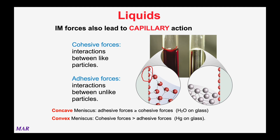Glass is polar and water is polar, so water grabs onto it — those are the adhesive forces at work. Mercury, on the other hand, has metallic bonding, which is a different kind of force from the polar glass. Because they don't interact well, mercury forms a convex meniscus — a little bulge — as if it's trying to get away from the glass. So polar substances in glass create a concave meniscus, while nonpolar or metallic substances create a convex one.